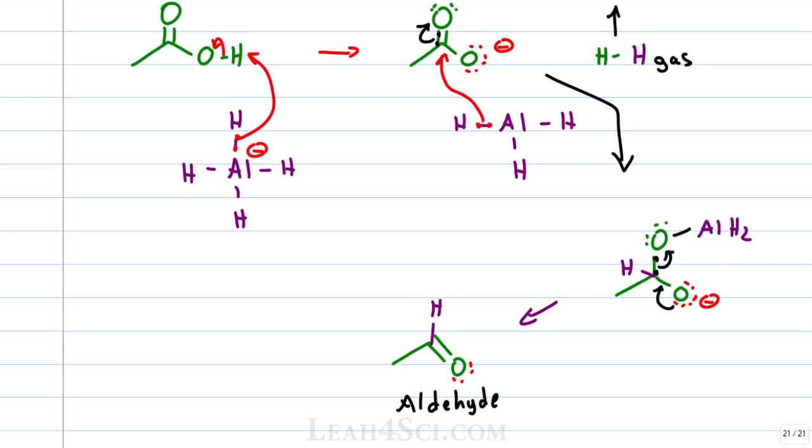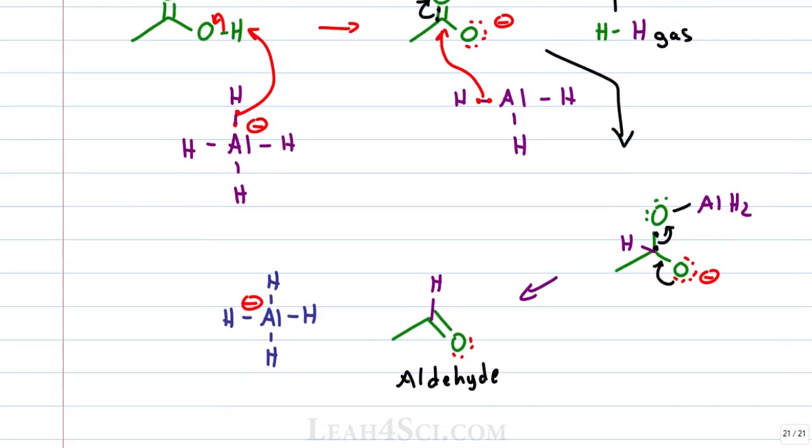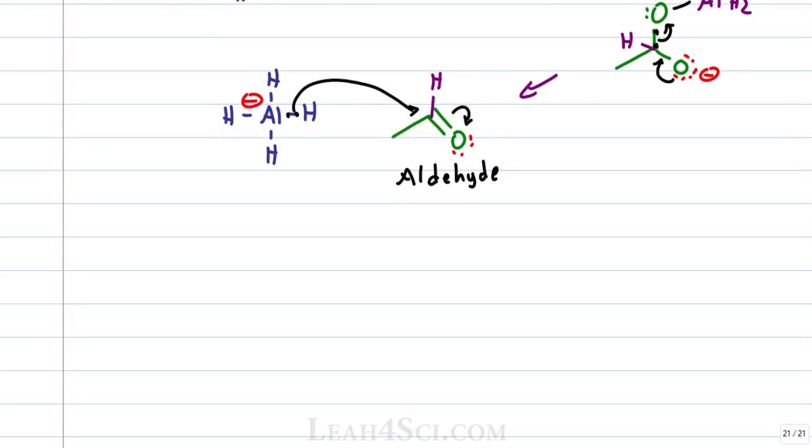And what happens if you have an aldehyde in the presence of AlH4 minus? If you said it's going to attack again, you're absolutely correct. Once again, we see the same exact reaction. Hydride will attack the carbonyl carbon, those electrons get kicked up onto the oxygen atom. And once again, we have a negative oxygen, but this time with two hydrogen atoms bound to that former carbonyl carbon, one from each step in the reduction.